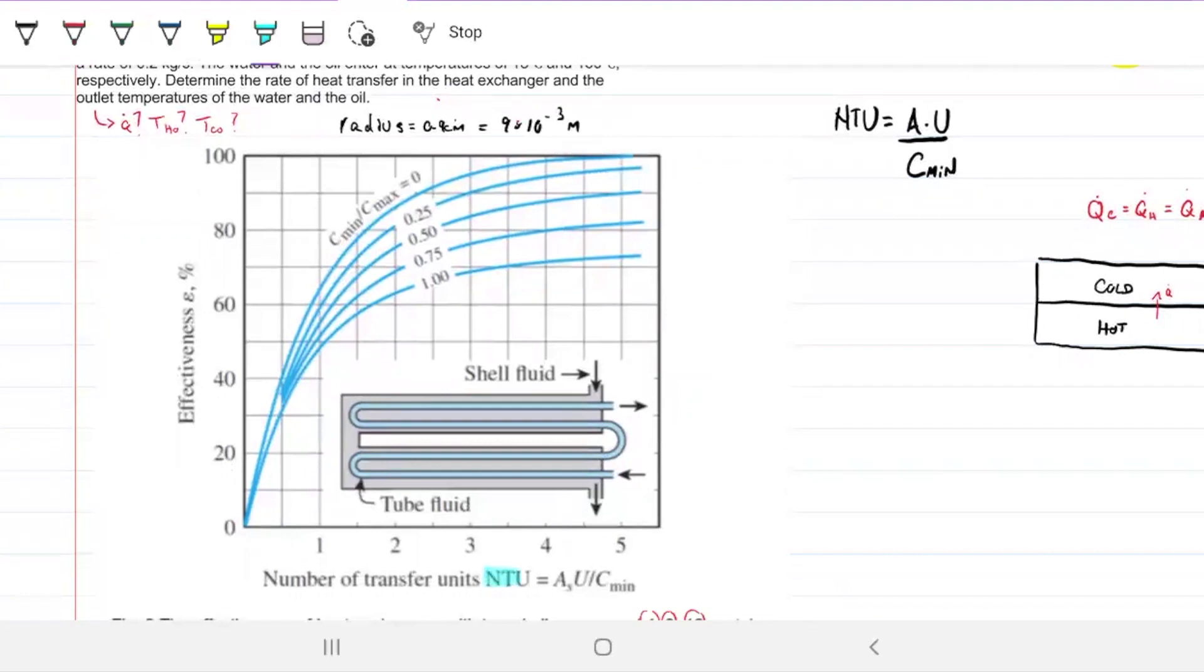We have NTU on the bottom here, so x-axis is NTU. Effectiveness is on the y-axis, and we have these blue lines, which are just a ratio between the two Cs, the minimum and the maximum.